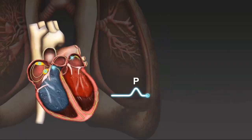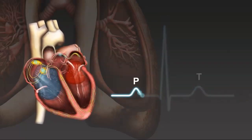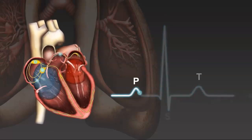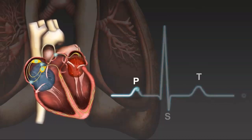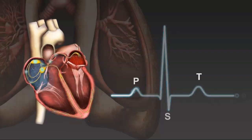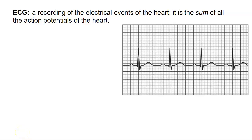During atrial fibrillation, the electrical activity of the atria becomes disorganized. As a result, there is no P wave on the ECG of a patient in atrial fibrillation. The absence of P waves is one of the most important features used to diagnose atrial fibrillation. An ECG can be intimidating, but let's distill it down to the basics — it's a recording of the electrical events of the heart, specifically the sum of all the electrical events or action potentials. The electrical activity of the heart is strong enough that it can be measured on the skin, where electrodes measure those electrical potential differences.